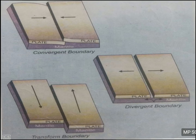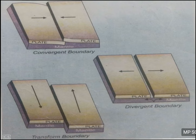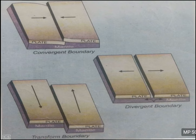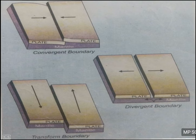These boundaries are explained with a figure. In the convergent boundary, two plates come close to each other; this diagram is also in your textbook. Sometimes one slides over the other, leading to the formation of mountains, because one crust going above another can lead to mountain formation. In divergent boundary, the plate is broken into two parts and they move in opposite directions. In transform boundary, the two plates are neither converging nor diverging but moving in their own direction and rubbing against each other as they pass.